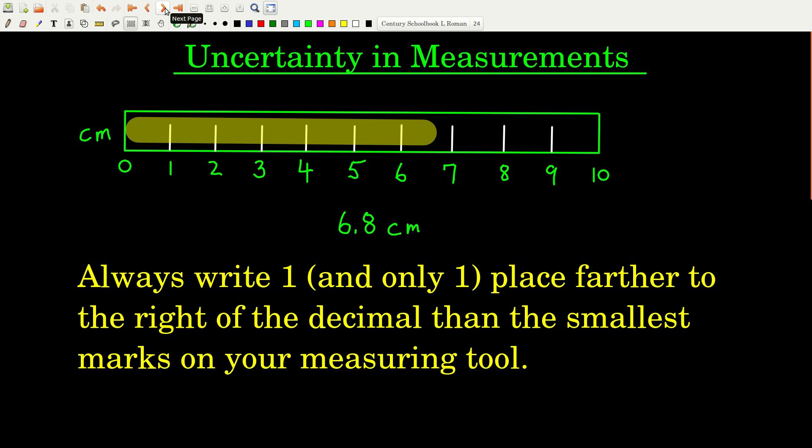So uncertainty in measurements. Whenever you make a measurement with an instrument, there is some uncertainty in the number that you take as a measurement, because there's always some limitation to the tool that you use. It doesn't matter what it is, a measuring stick, a balance, a graduated cylinder, what have you.